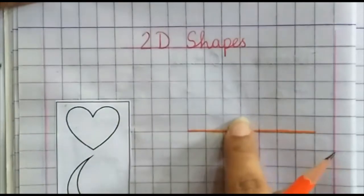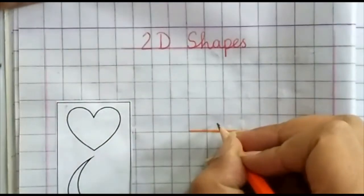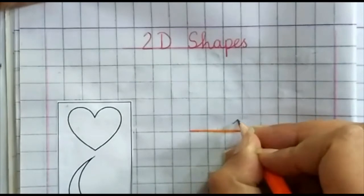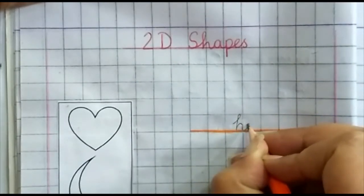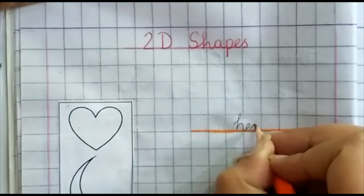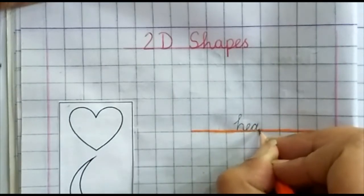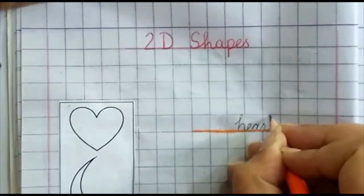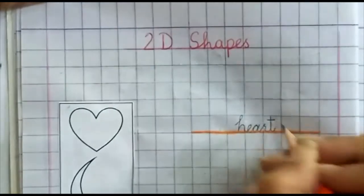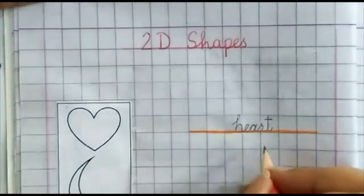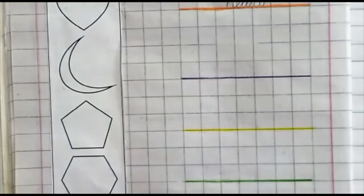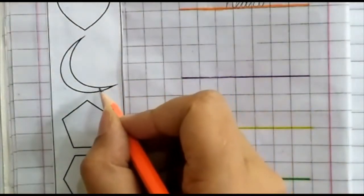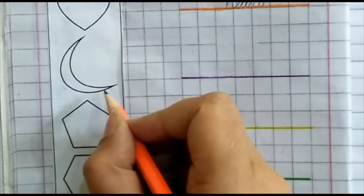Now we write here: heart. Write with me, one class — heart, H-E-A-R-T, heart. This shape is heart. Now look at the next shape. This shape is crescent.